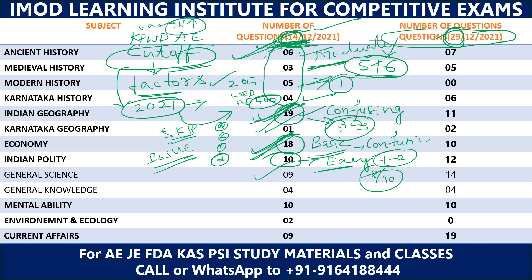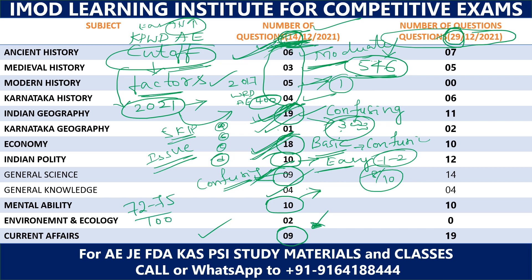General Science is confusing. If you have studied questions from the book, questions are asked from general science, general knowledge, and mental ability. If you have covered current affairs questions, around 72 to 75 marks out of 100 will be easy marks.